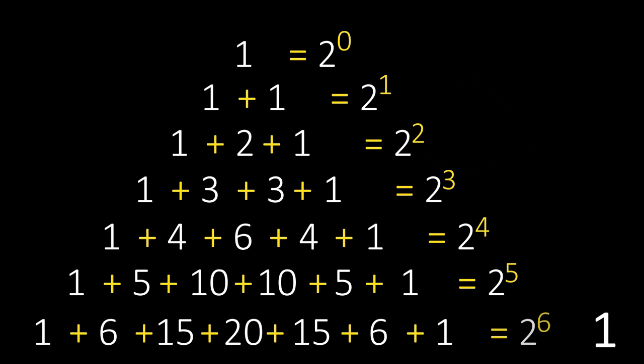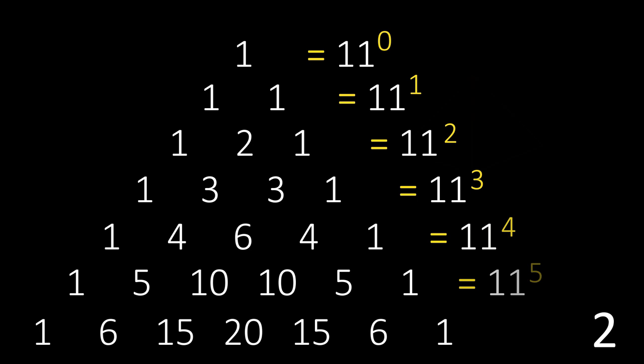If you add up the numbers in each row, you get the powers of 2. If you read the number from left to right, you get the powers of 11.